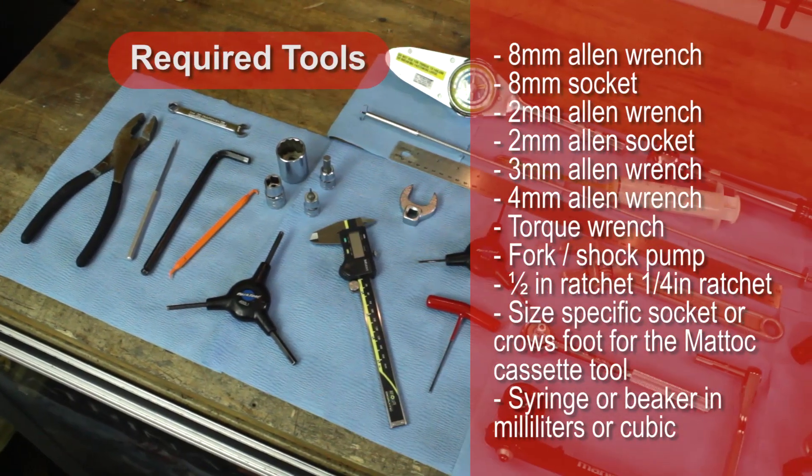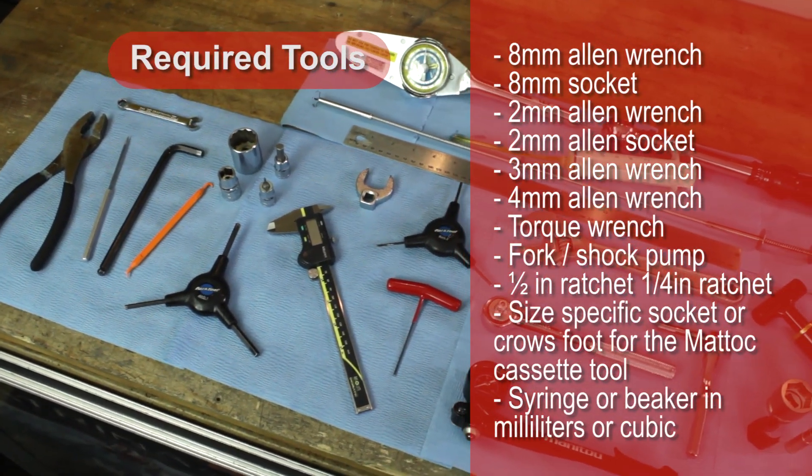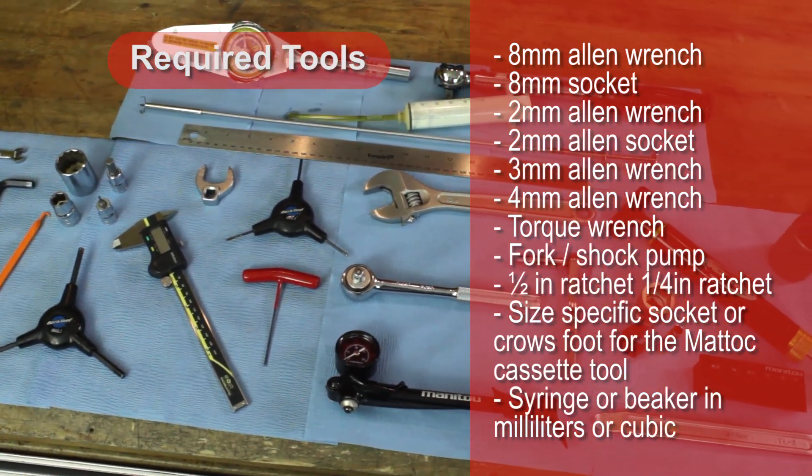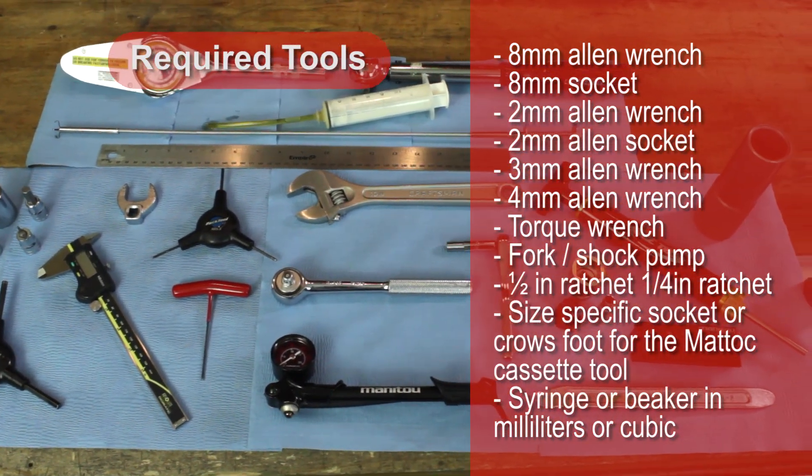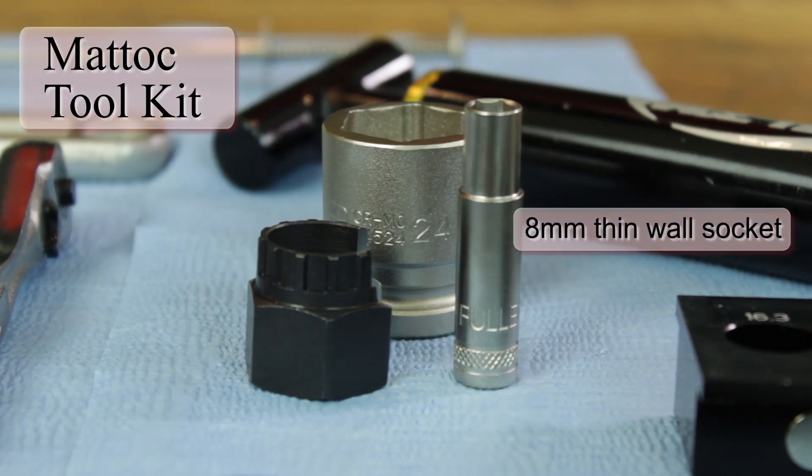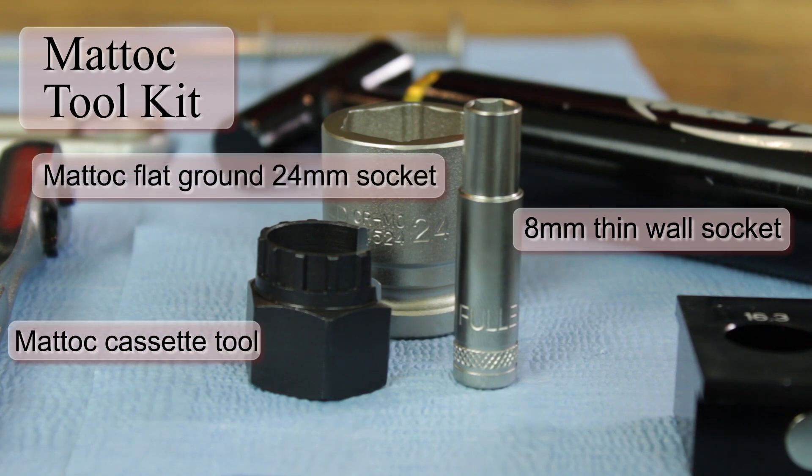You will need many tools to disassemble and reassemble the Matic. Most of these tools are common. To disassemble and reassemble your Matic, you will need to purchase the Matic tool kit. This includes the Matic 8 millimeter thin-walled socket, the Matic cassette tool, and the Matic flat ground 24 millimeter socket.